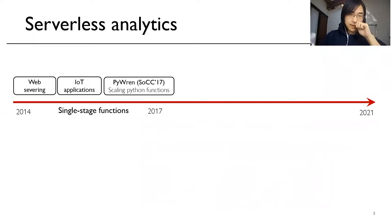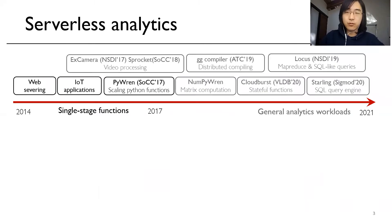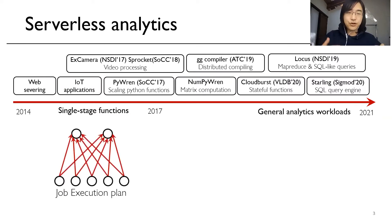As we can see from this timeline of the development of serverless applications, back in 2014, people started with simple single-stage functions such as web serving and IoT applications. Recently, we are witnessing more and more general analytics workloads such as MapReduce and SQL queries on top of serverless. Many of these applications have an execution plan composed of multiple stages, and each stage composed of multiple tasks.